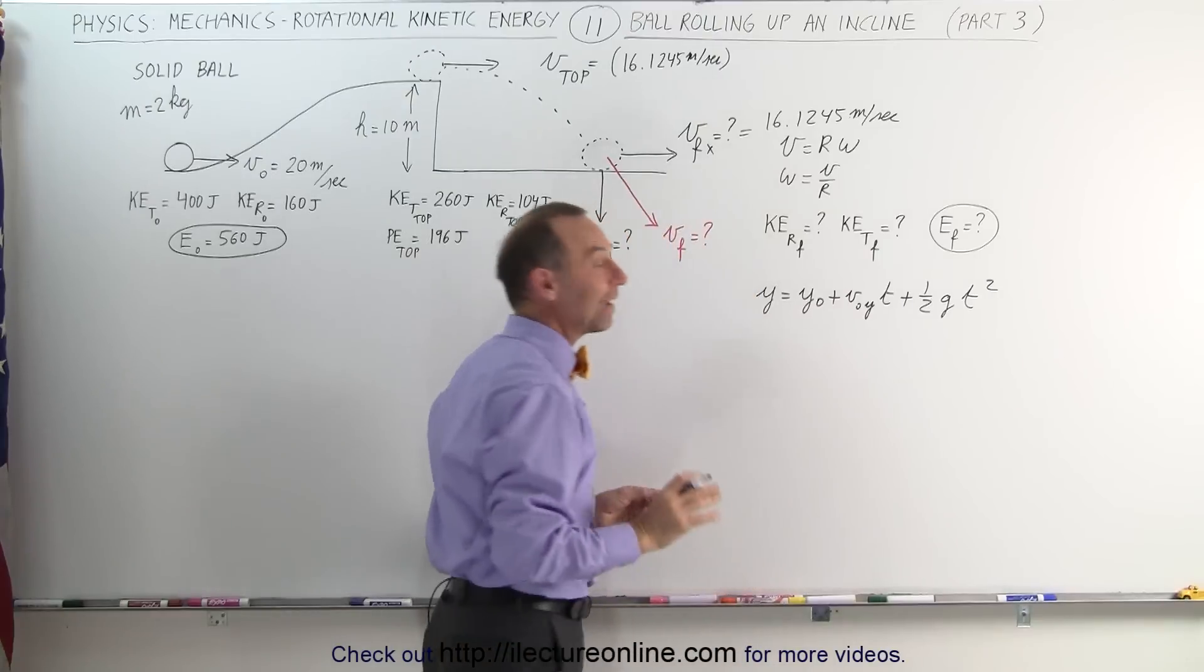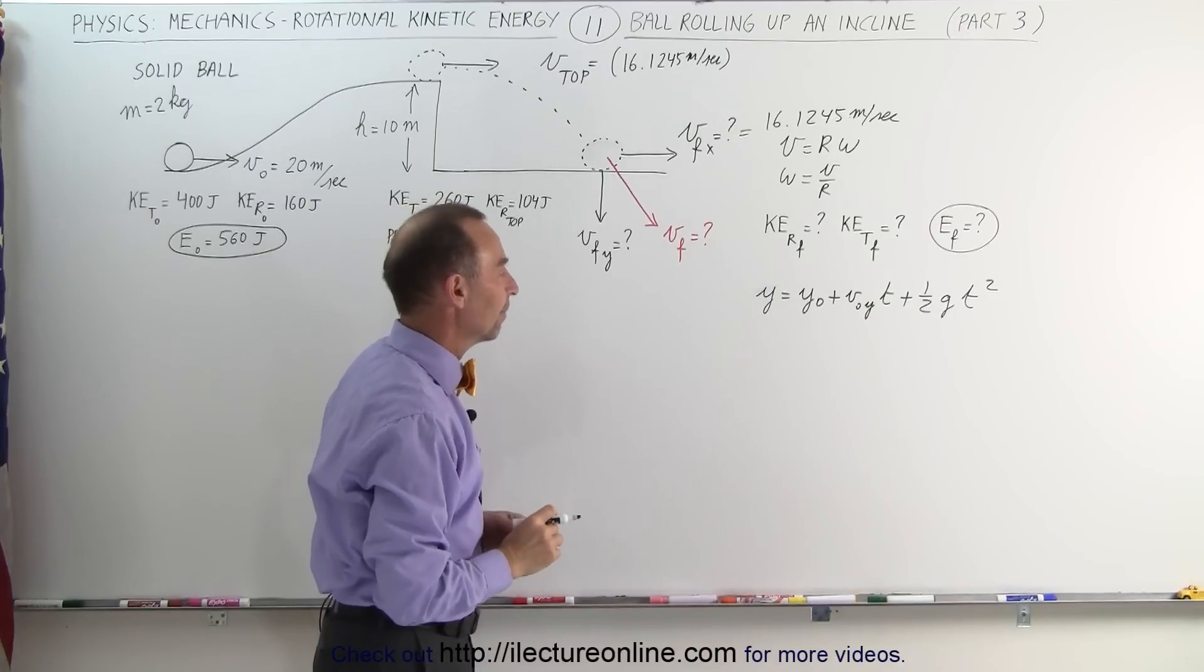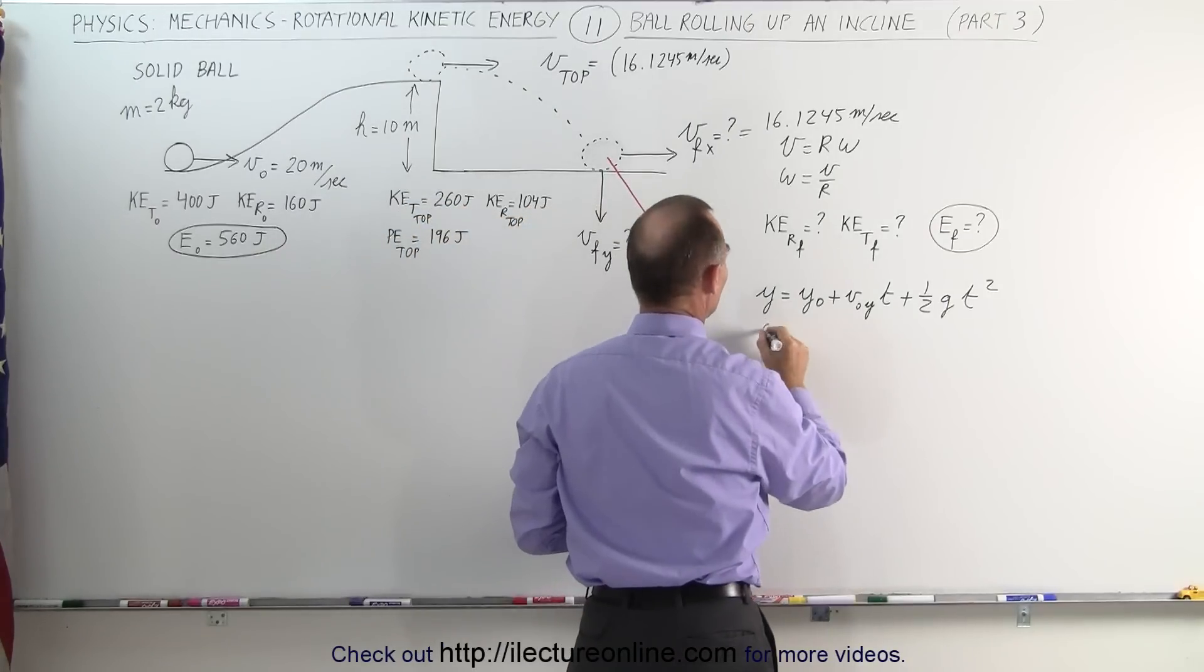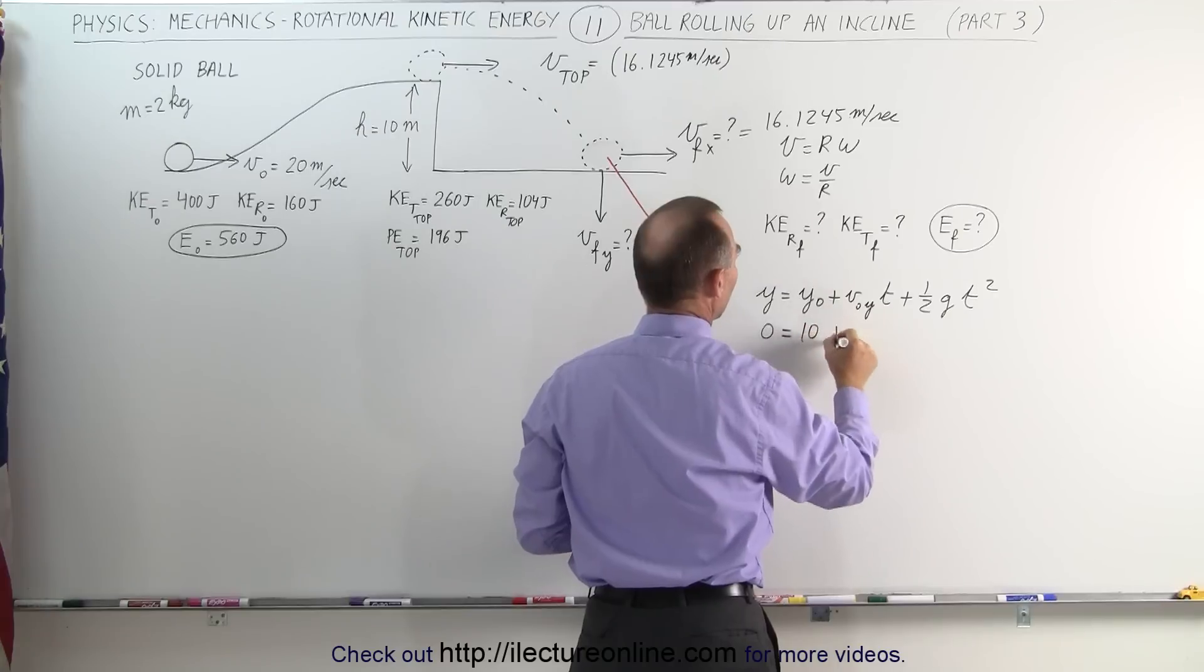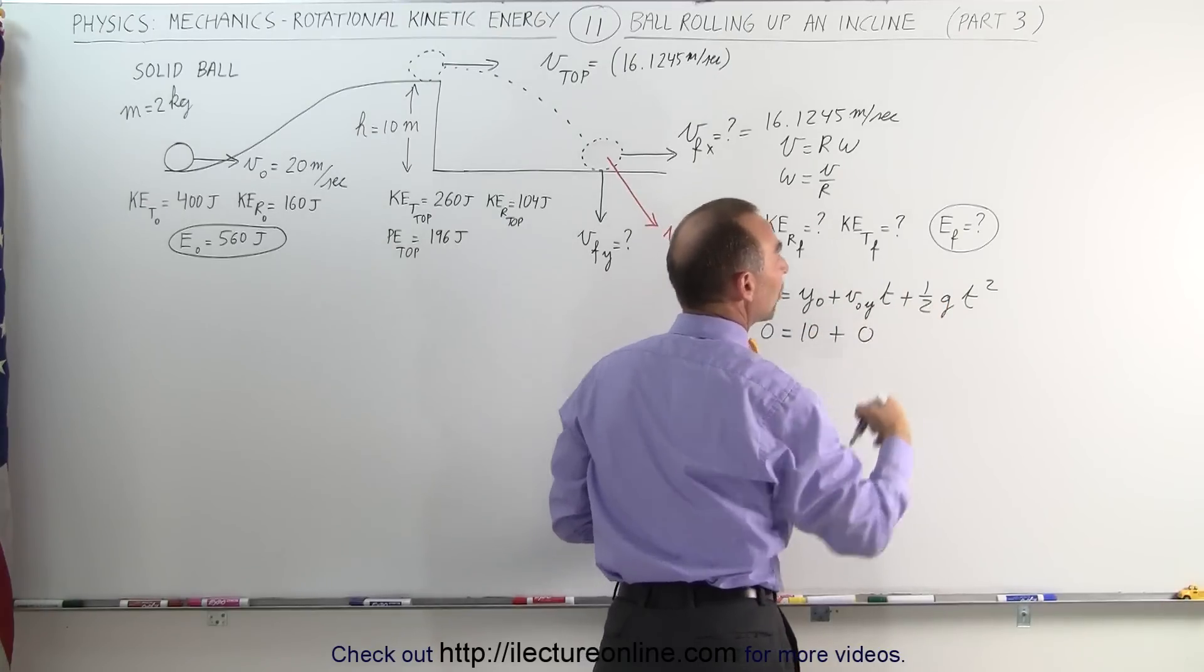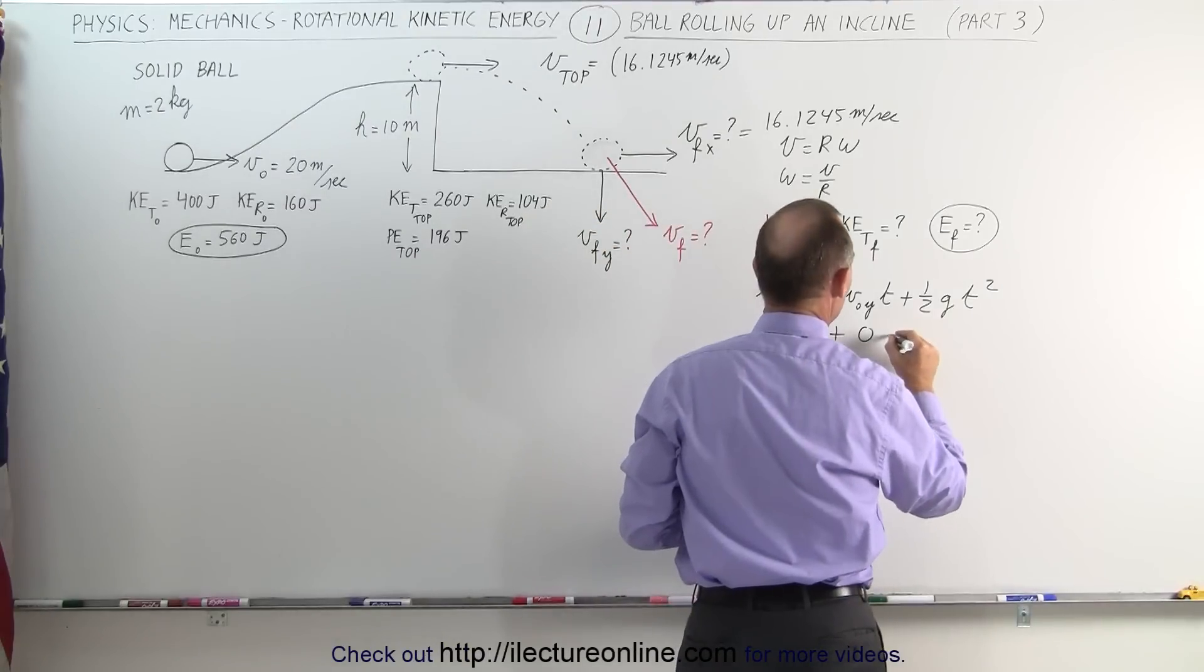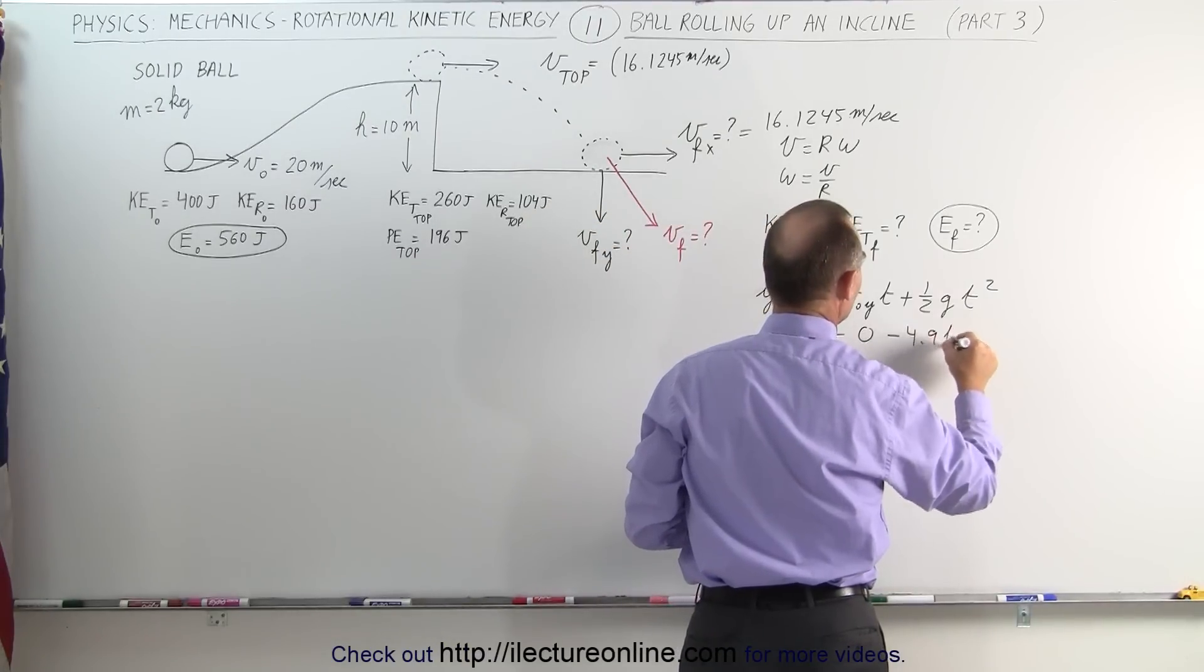And we're looking for time, time in the air, so we can then find velocity final in the y-direction. The final height will be zero. The initial height is 10. The initial velocity in the y-direction is zero. And g is minus 9.8 meters per second squared when we do kinematics. So this becomes minus 4.9 t squared.